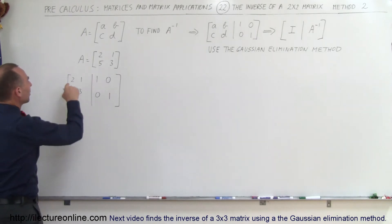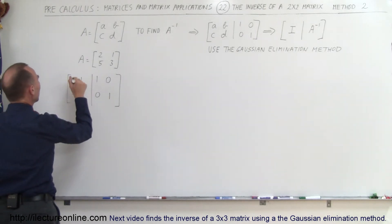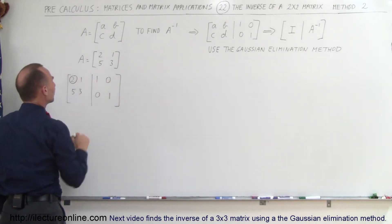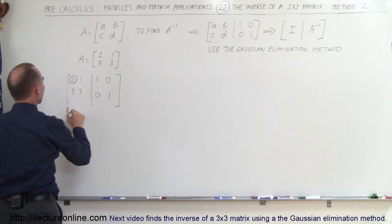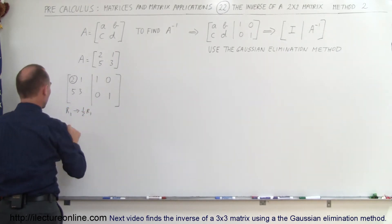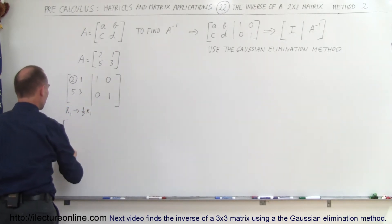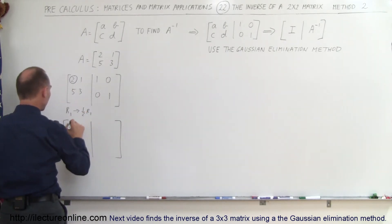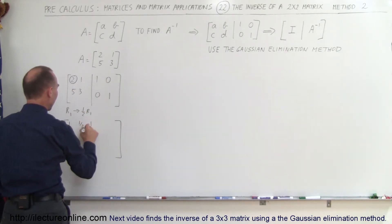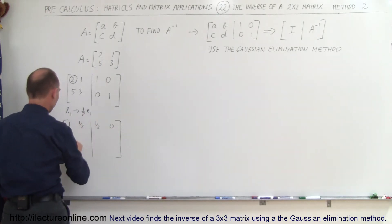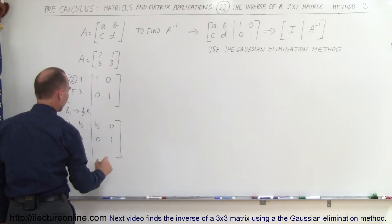Step 1: we want the top-left element to become a 1. That means I have to take the first row and divide it by 2. So row 1 becomes one-half times row 1, which gives us: 1, one-half, one-half, 0. The second row doesn't change: 5, 3, 0, and 1.